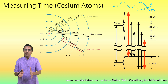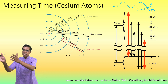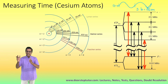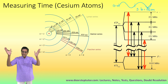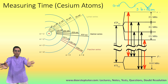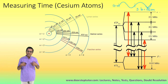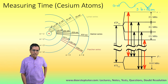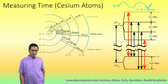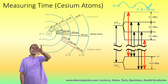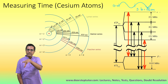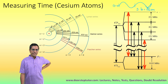We measure the time period of one particular wave from the cesium atom and put nine billion such time periods next to each other — that gives us one second. I have defined my one second this way, and all other clocks in the universe measure time on this basis.